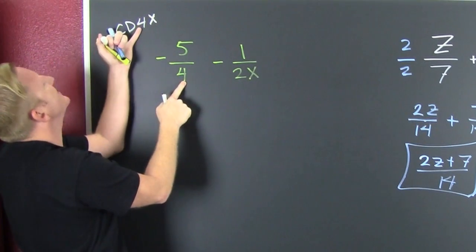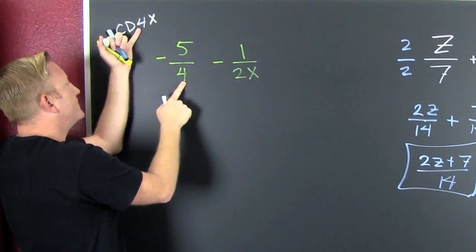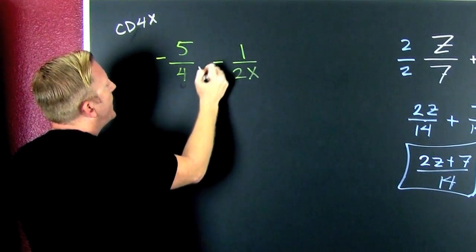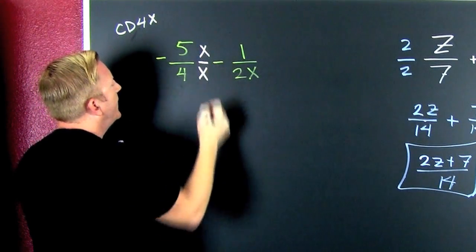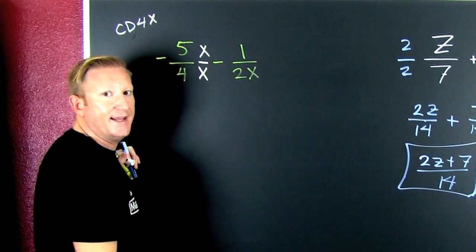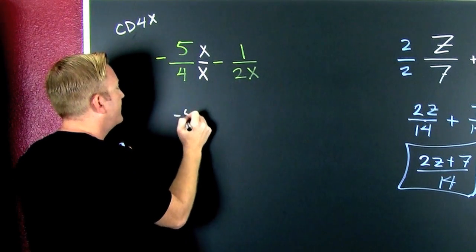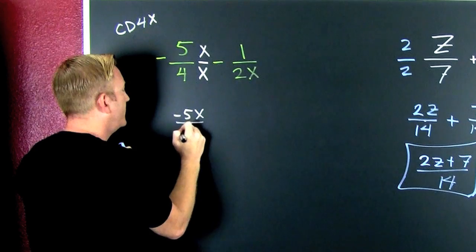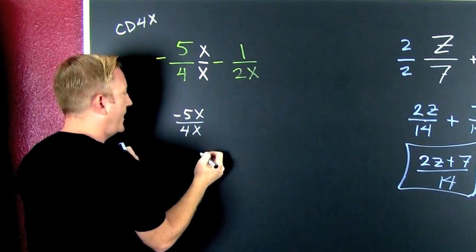So, what do I multiply 4 by to get 4X? I multiply it by an X. Yeah, an X over an X. And then, I have a minus 5X over 4X. Yeah.